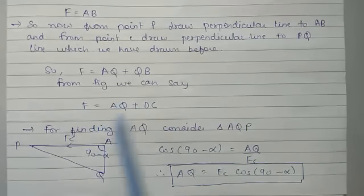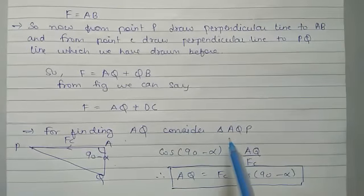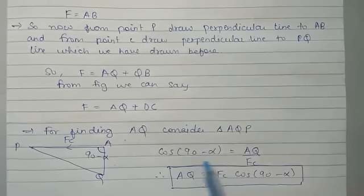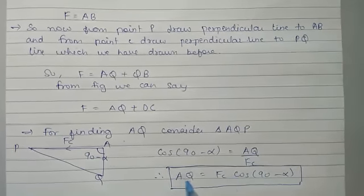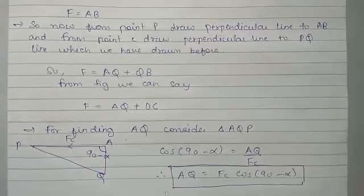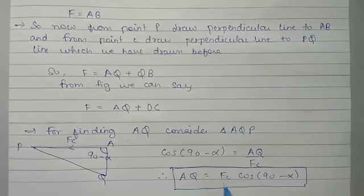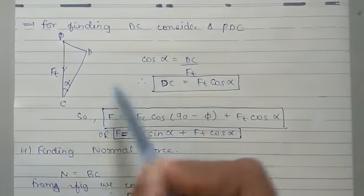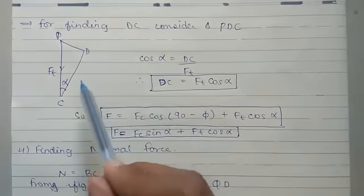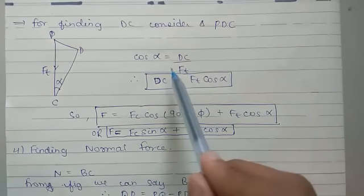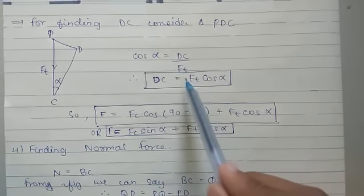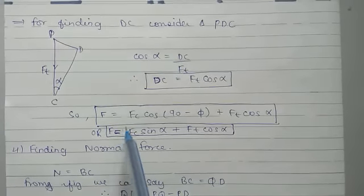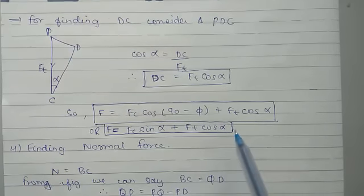We need to find AQ and DC. For finding AQ, consider triangle AQP. By trigonometry, cos(90 minus alpha) is equal to AQ by Fc, so AQ is equal to Fc sin alpha. For finding DC, consider triangle PDC. cos alpha is equal to DC upon Ft, so DC is equal to Ft cos alpha. Therefore F is equal to Fc sin alpha plus Ft cos alpha.